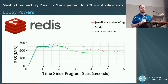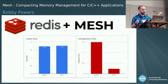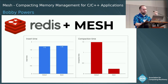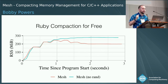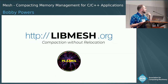Coming back to the results: we perform as well as application-specific compaction techniques. For Redis, compaction time and insert time — largely governed by malloc and free performance — are competitive. We also perform well on Firefox. One neat side effect is we provide compaction to other languages implemented in C and C++ without moving garbage collectors, like Ruby. Check out libmesh.org for our implementation, which is up on GitHub. Thank you.